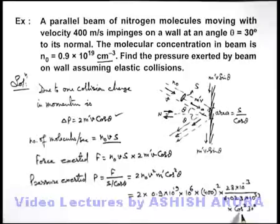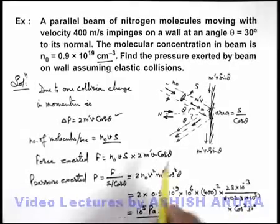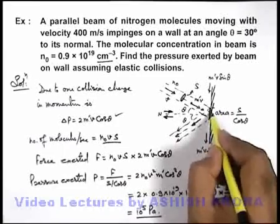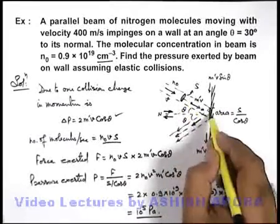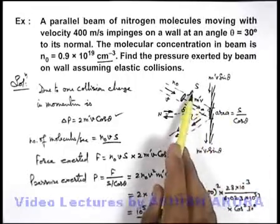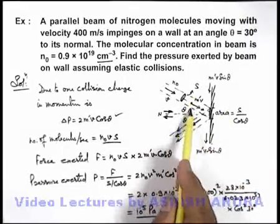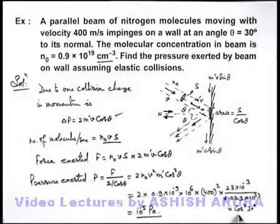When you simplify this expression the final result will be 10^5 Pascal. You can easily verify it by simplifying the expression. So this beam is striking on the wall at an area which is slightly more than the beam area, but you can see the result does not depend on actually the beam area, depends on the angle because cos² θ is taken here. So in this situation the pressure is calculated as 10^5 Pascal which is the answer to our problem.